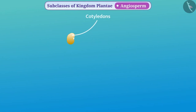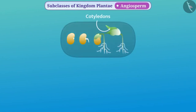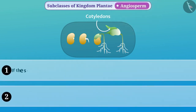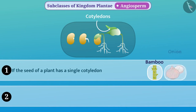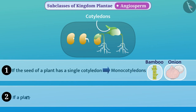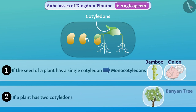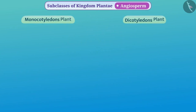The seeds have cotyledons, which turn green after germination. Depending on the number of cotyledons, angiosperms can be classified into two parts. If the seed of a plant has a single cotyledon — such as bamboo or onion — then such plants are called monocotyledons. But if a plant has two cotyledons — such as the banyan tree — then such plants are called dicotyledons.